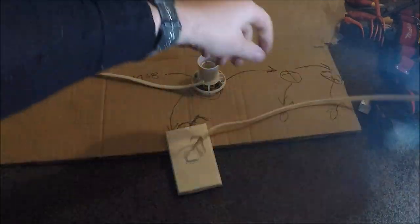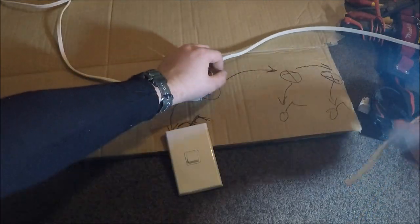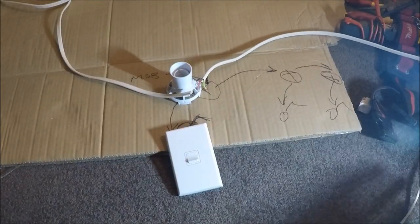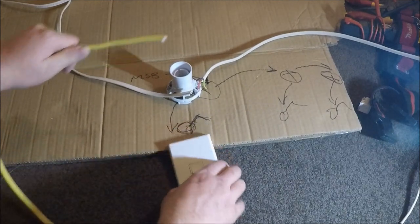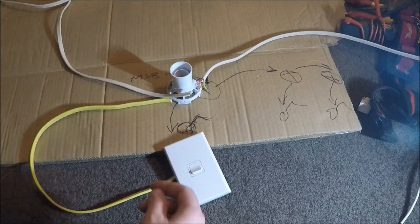That loops out. It's still the feed from the switchboard, but it loops out to the next light fitting in the chain. And then this yellow cable is going to be the one that goes to the light switch itself.